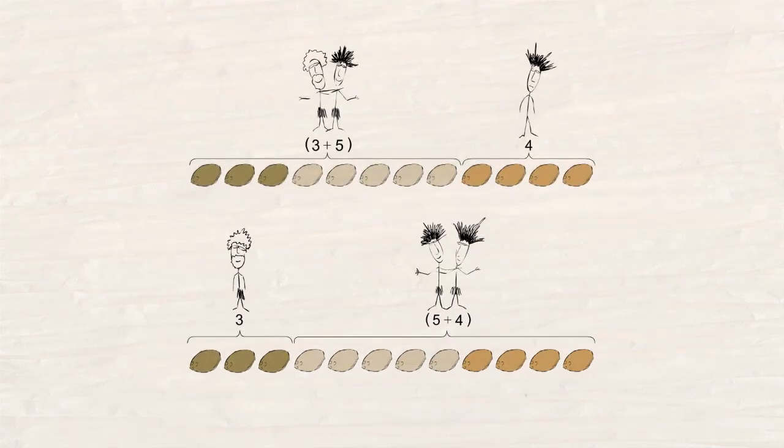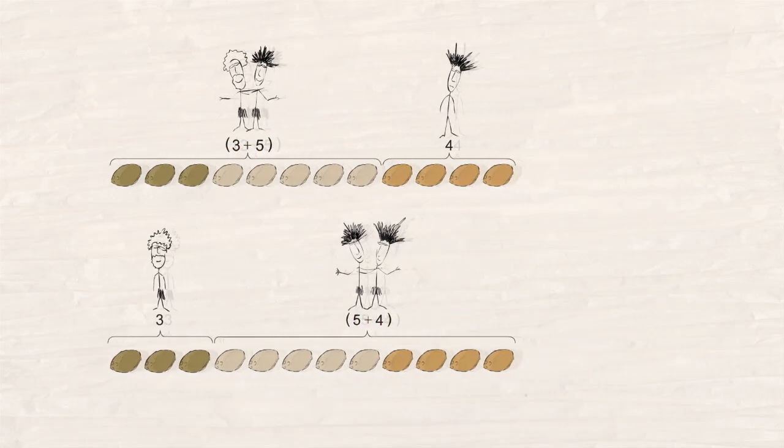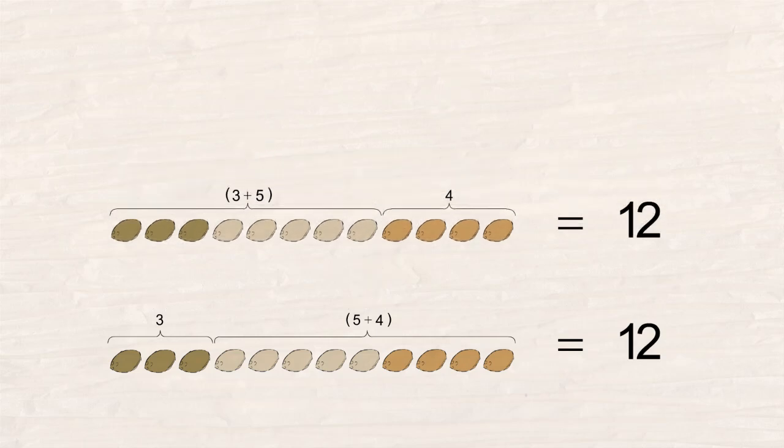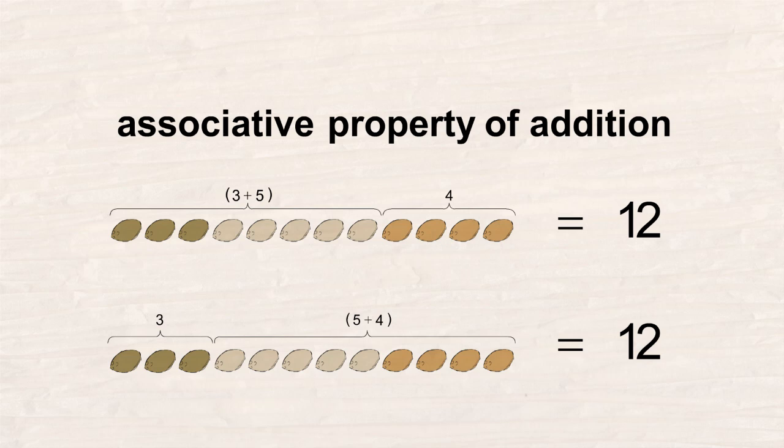In these two scenarios, the coconuts were grouped in different ways before they were added. However, we ended up with the same number. This illustrates what is called the associative property of addition because it doesn't matter in which way the coconuts are grouped or associated with each other before they are added. In the end, they all add up to the same number.